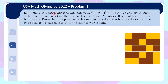Let A and B be positive integers. The cells of an (A+B+1) by (A+B+1) grid are colored either amber or bronze, such that there is a minimum of A²+AB−B amber cells and a minimum of B²+AB−A bronze cells. Prove that it is possible to choose A amber cells and B bronze cells such that no two of the A+B chosen cells lie in the same row or column.